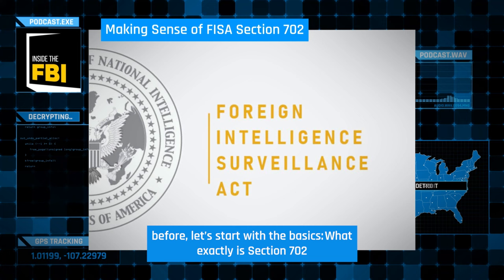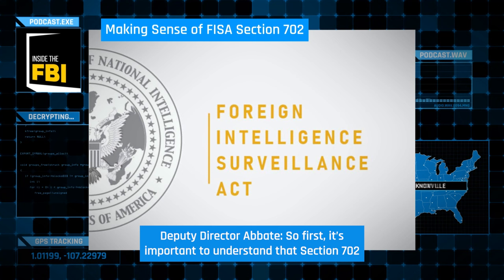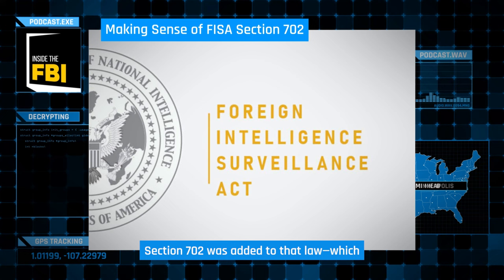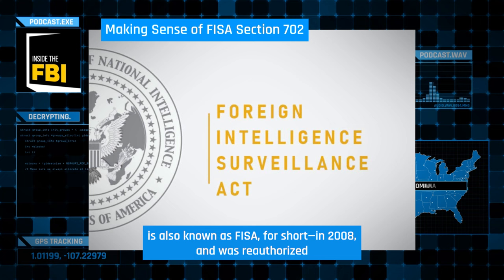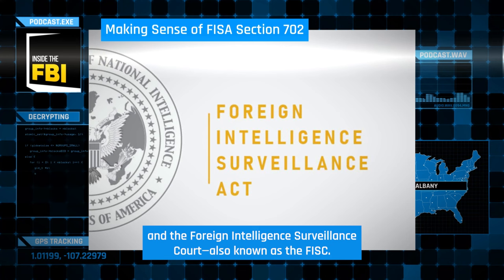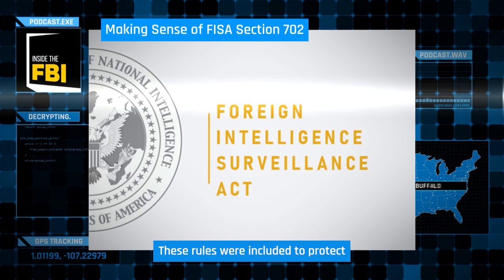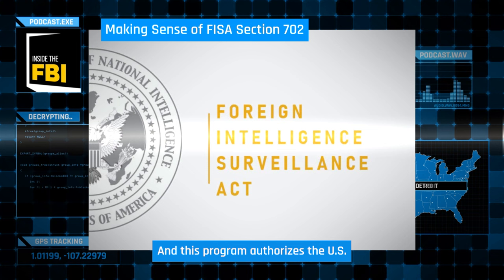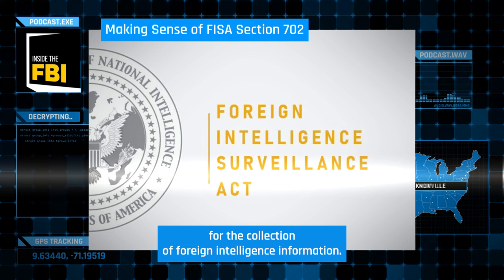It's important to understand that Section 702 is a critical part of the Foreign Intelligence Surveillance Act. Section 702 was added to FISA in 2008 and was reauthorized by Congress in 2012 and again in 2018. It is a program authorized by Congress with rules set by Congress and the Foreign Intelligence Surveillance Court, also known as the FISC, to protect Americans' privacy and civil liberties. The program authorizes the U.S. intelligence community to target non-U.S. persons located outside the U.S. for collection of foreign intelligence information.